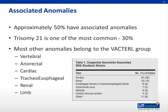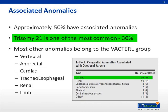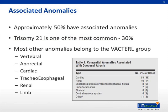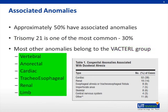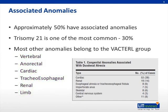Associated anomalies are present in approximately 50% of cases of duodenal atresia. Congenital heart disease and trisomy 21 are the most common associated conditions, each occurring in about 30% of cases. Other associated anomalies are usually related to the VACTERL group, such as vertebral, anorectal, cardiac, tracheoesophageal, renal, and limb abnormalities. The outcome for patients depends more on the severity of these associated anomalies than on the surgical management of the obstruction itself. In addition, for unknown reasons, more than 50% are born prematurely.